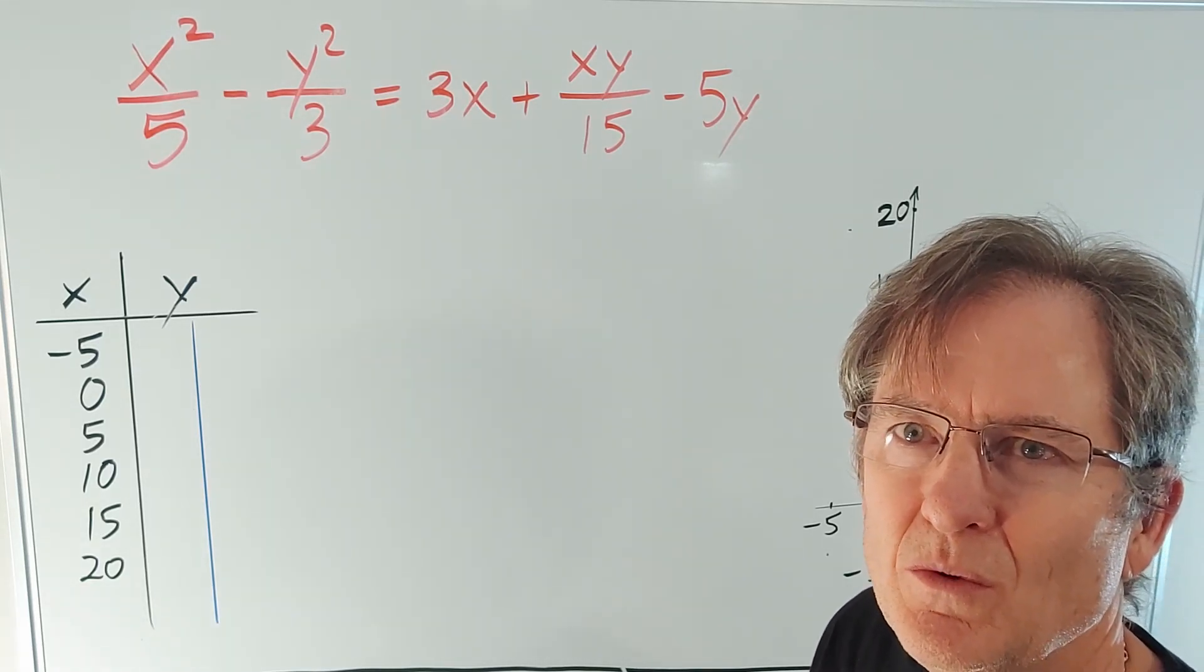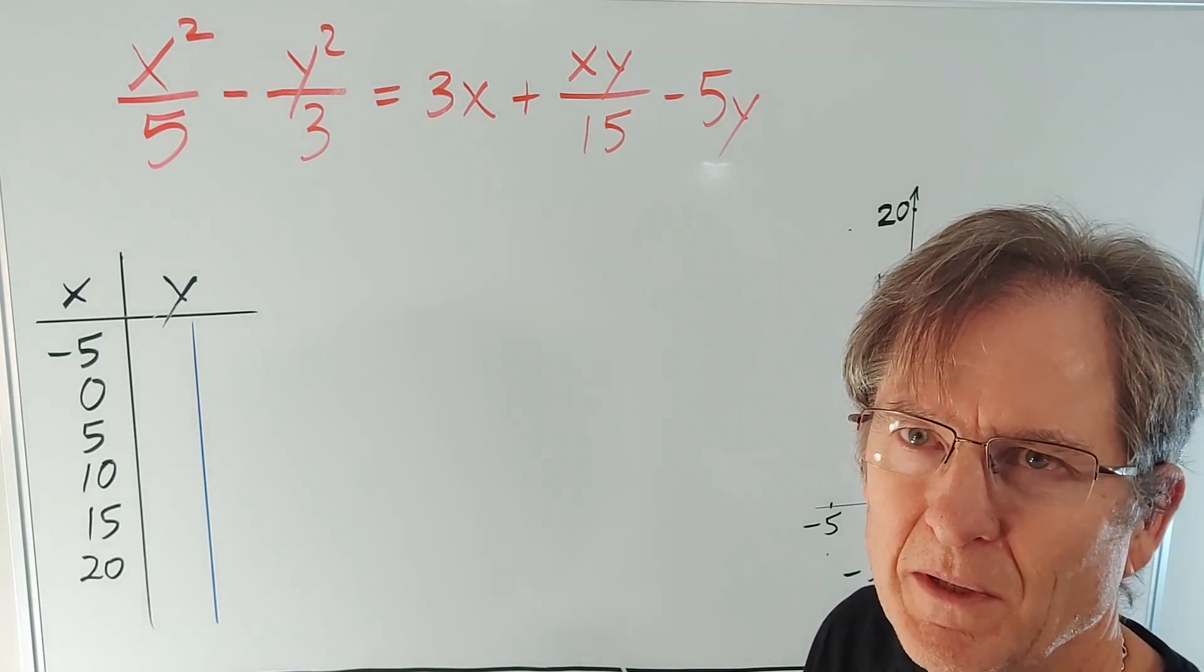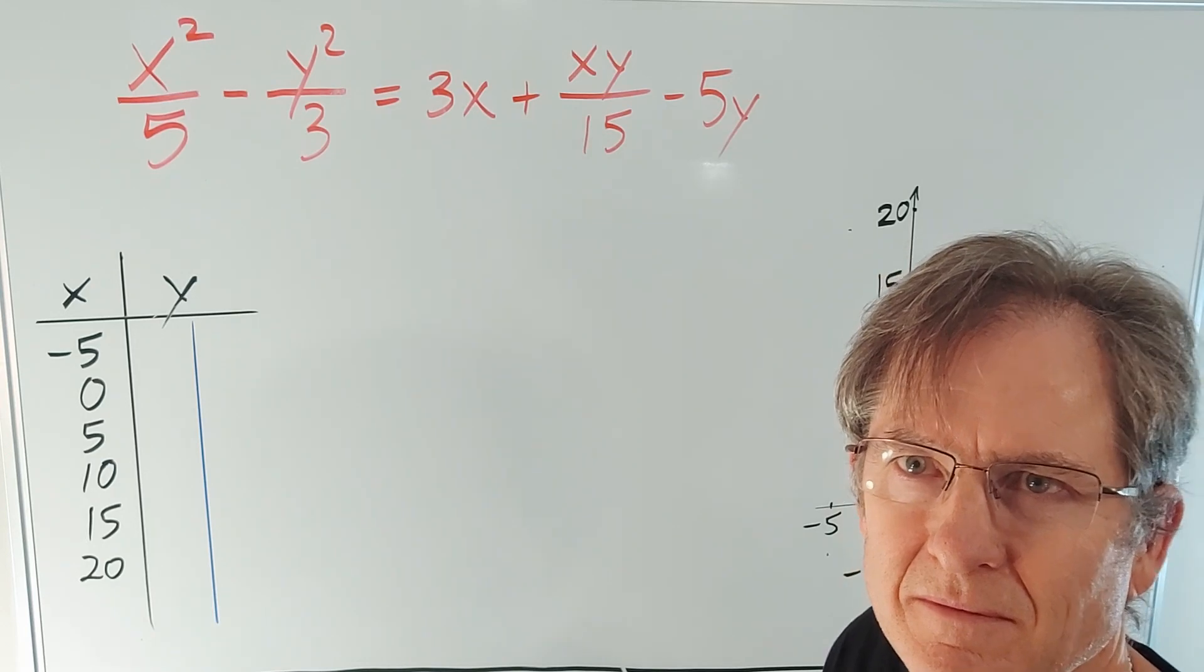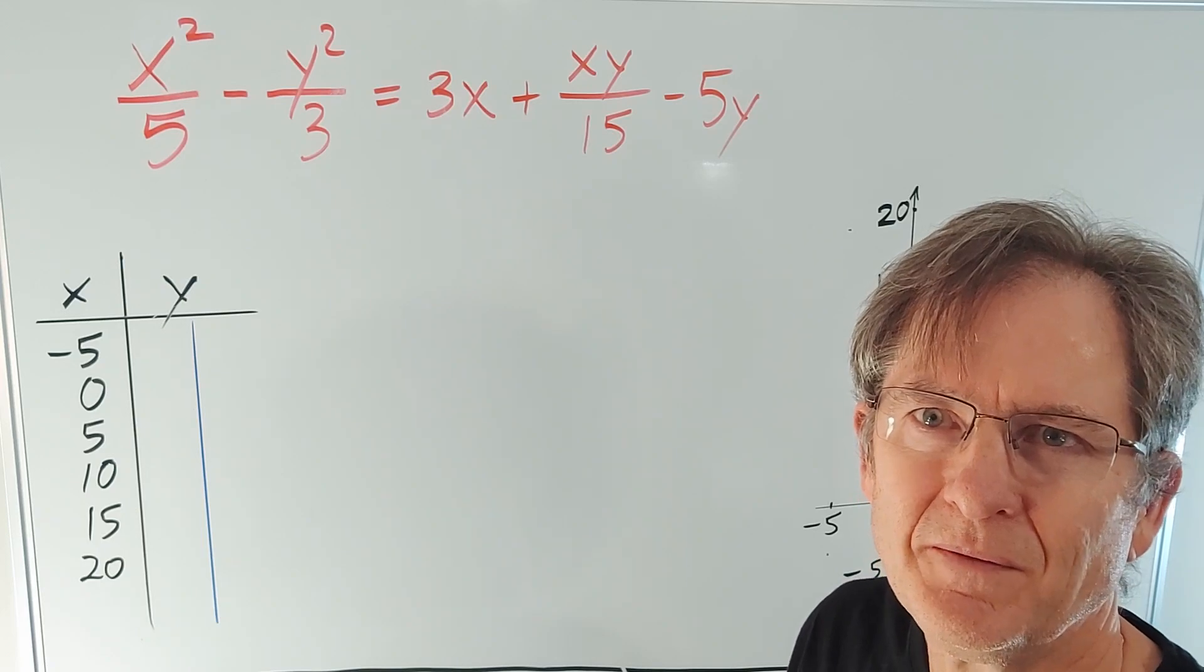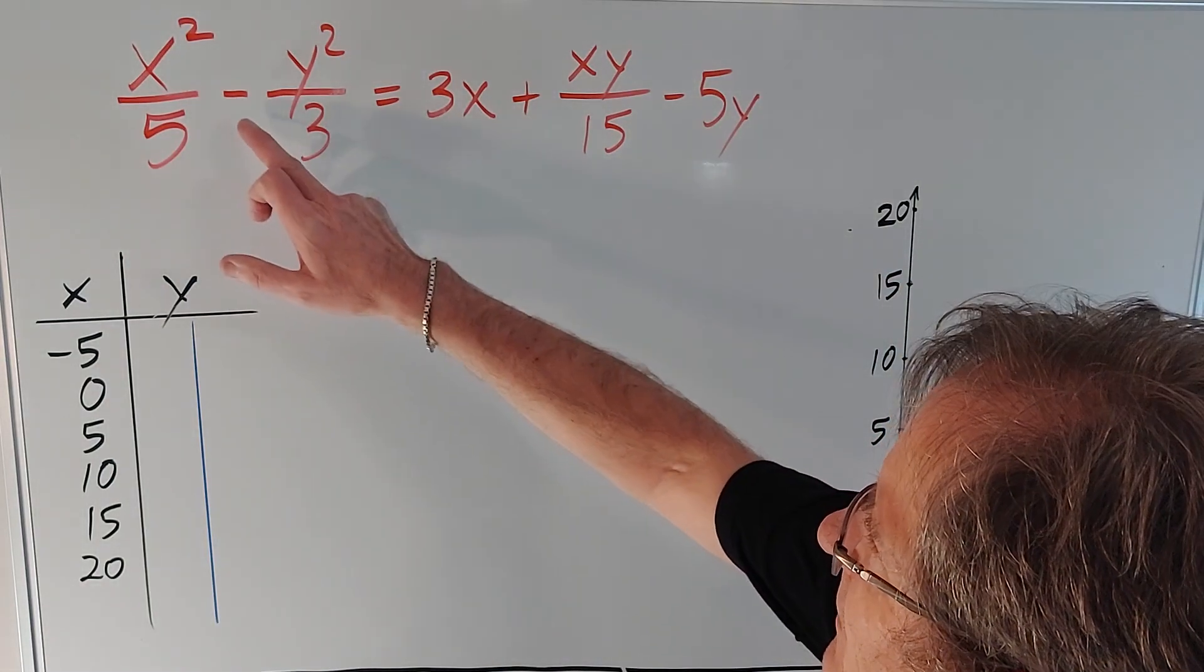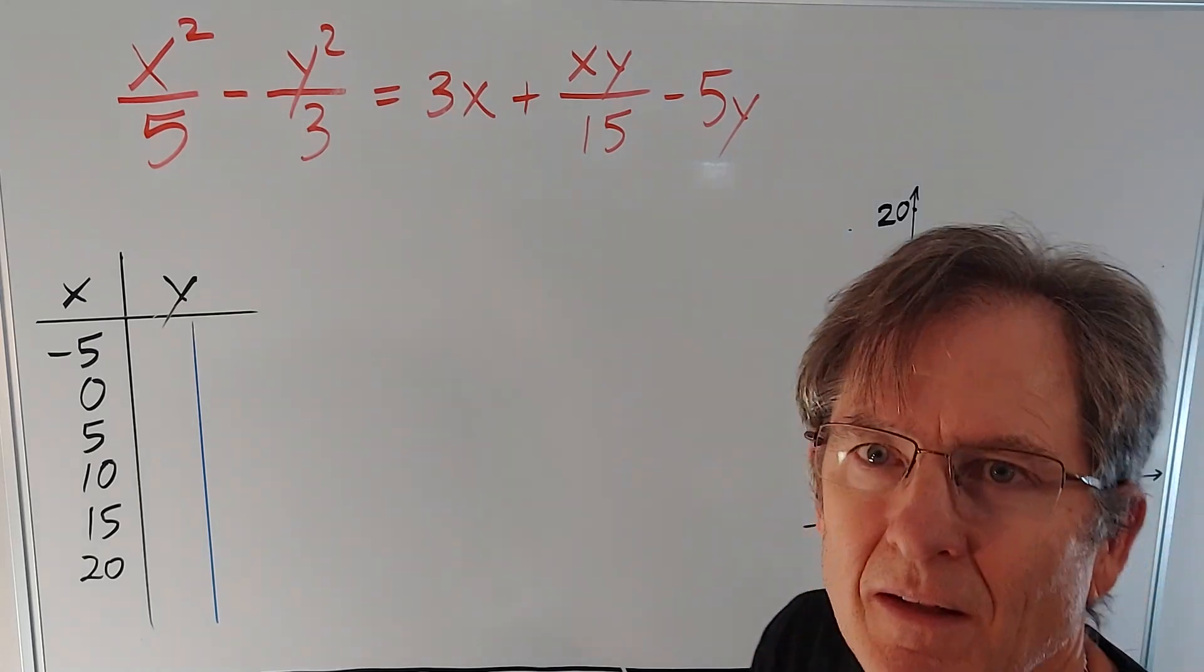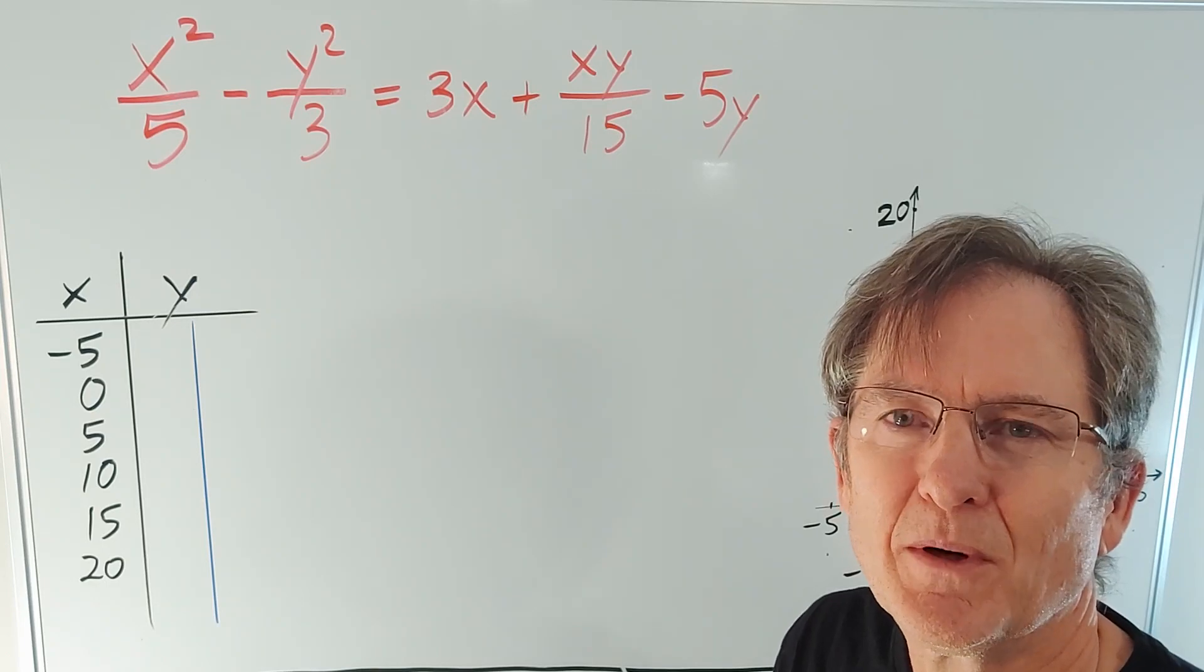Well first of all there's two y's for every x, so it's not a function. Could be a circle, could be an ellipse, how can we tell? Well the clue is this minus sign right here. That makes it a hyperbola, you got it.